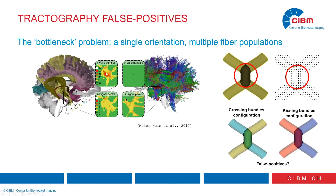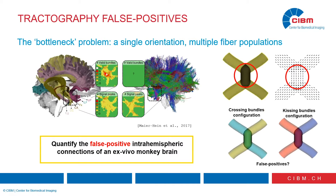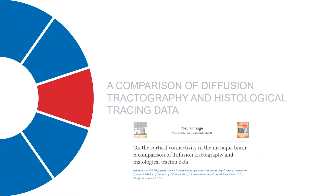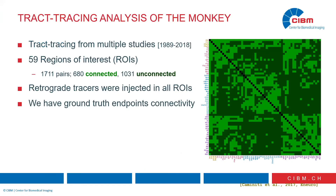In the study we'll be discussing today, we wanted to quantify this in more detail on real data. We looked into the intrahemispheric connections of an ex vivo monkey brain. This work was just published in NeuroImage — please have a look at the paper if you are interested. We used a collection of retrograde tracer injection studies located mainly in the parietal and frontal areas of the monkey brain, with a total of 59 regions injected once or more with tracer, forming a total of 1,711 different pairs of regions. This connectivity matrix on the right is our ground truth.